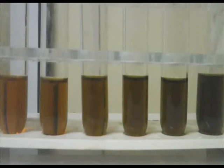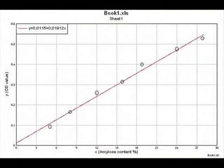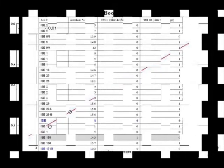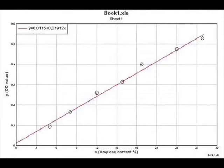For amylose estimation, starch was used as a standard to plot the graph. The amylose content was obtained in terms of percentage. Using a deep plot, a standard straight line was drawn. By scanning the straight line according to the OD values, amylose percentages were calculated for every accession of the core collection. All accessions are categorized under low amylose content category, showing a variation between 9% and 20%. Out of 96 accessions, 73 showed 12% to 16% amylose content variation.